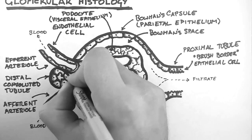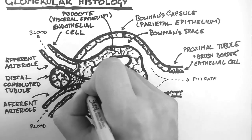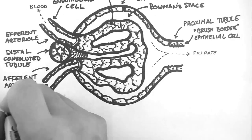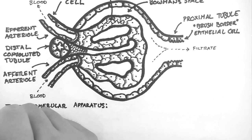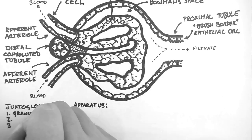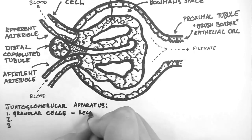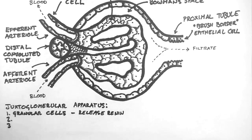Between the distal convoluted tubule and the glomerulus, there is a highly specialised group of cells called the juxtaglomerular apparatus — not to be confused with the juxtamedullary nephron, which is something else entirely. There are three cell types in the juxtaglomerular apparatus. The first are granular cells, and they produce renin, which is the start of the renin-angiotensin-aldosterone system, which is really important in controlling blood pressure.